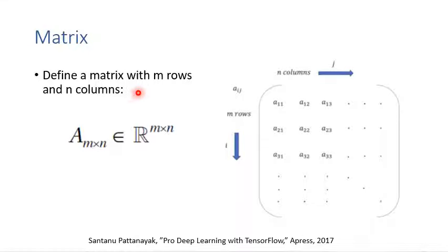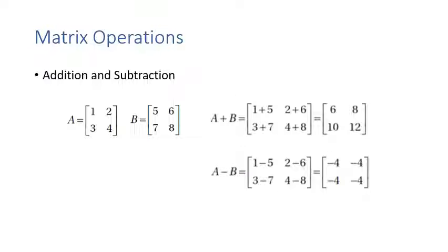To define a matrix, we specify the number of rows and columns. Suppose we have a matrix with m rows and n columns — we represent this as an m-by-n matrix in the real numbers. Let's look at basic matrix operations. The first two are addition and subtraction, which are straightforward: just add or subtract the corresponding entries of matrix A and matrix B.